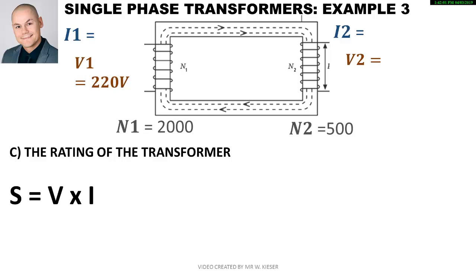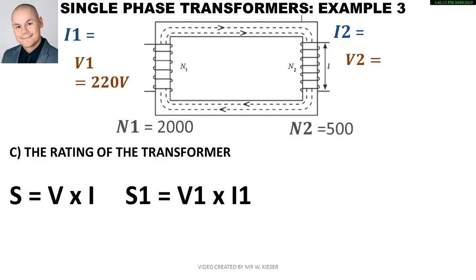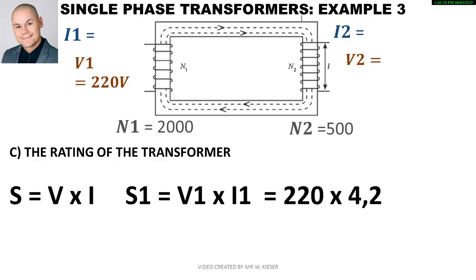To calculate the rating of the transformer, we can use either the primary or secondary side and should get the same answer. Using the primary side: voltage is 220 volts and current on the primary side is 4.2 amps, giving us a rating of 924 volt-amps.